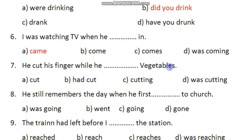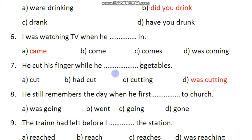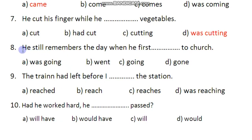Next: He cut his fingers while he dash vegetables. 'Cut' here is the second form — simple past. While he was cutting vegetables — so the right option is 'was cutting.' Past continuous tense is used for the ongoing action with 'while.'